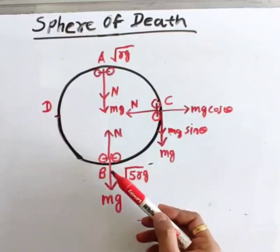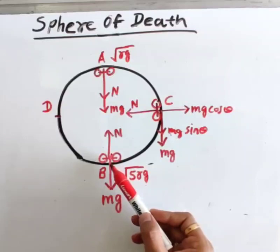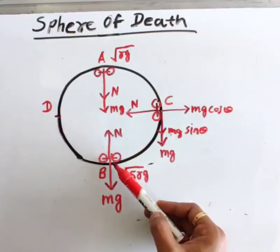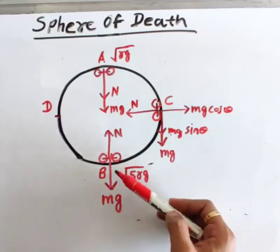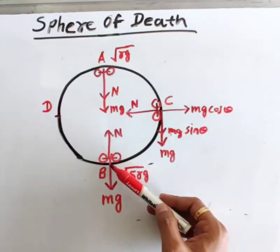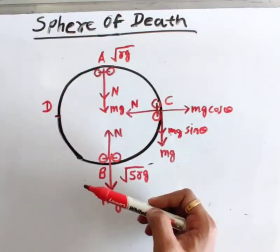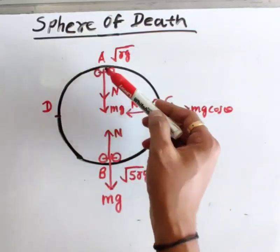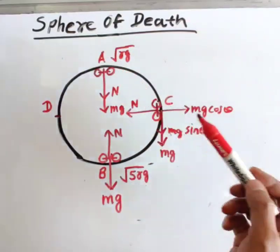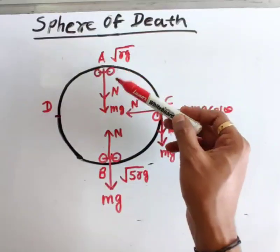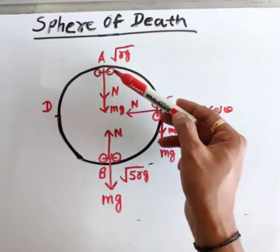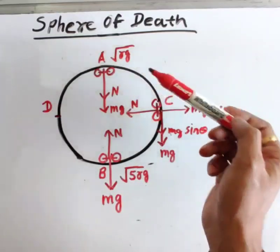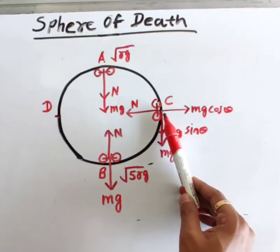In this diagram, a motorcyclist is performing vertical circular motion in the Sphere of Death. At the lowest position, the weight mg acts vertically downward and the normal reaction between the sphere and the vehicle acts in the upward direction. When the vehicle moves to the topmost position, that is point A, the weight mg acts downward and the normal reaction between the vehicle and the sphere also acts in the same downward direction.